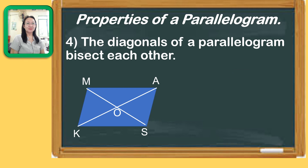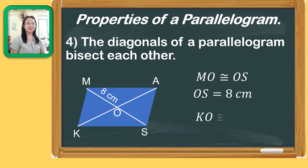Let us consider this measurement. If MO is congruent to OS and the measure of MO is 8 cm, then OS is also equal to 8 cm. Similarly, if KO is congruent to OA and the length of KO is 12 cm, then OA is also 12 cm.